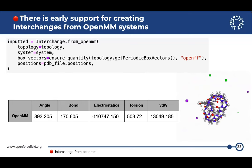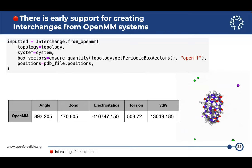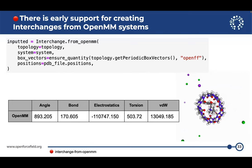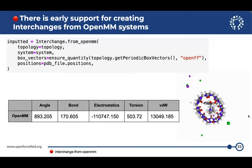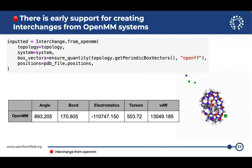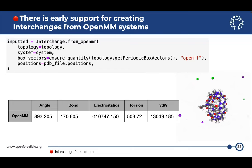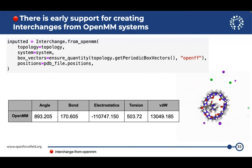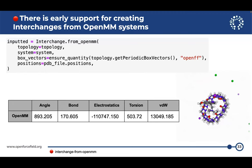Here for example, we've taken a SAMPL6 host-guest system and loaded it into interchange using the from_openmm method. We evaluated it — the numbers are a bit funny, but we got it in there, we can re-export it to OpenMM, we have the data structures holding onto it, and we could try to export it to GROMACS (though that would probably be even uglier). This one's not wiggling — that's an indication of how much we trust it. This is a red vignette.